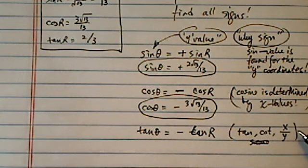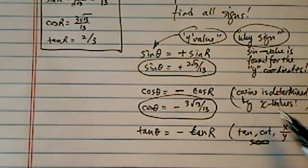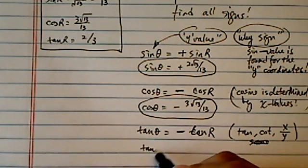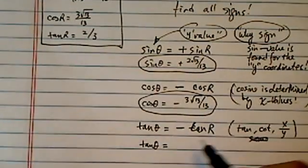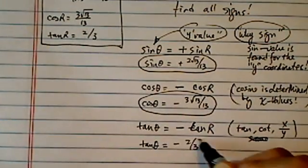That's why in quadrant 3 and quadrant 1, tangent are positive. In quadrant 2, it's negative. So therefore, we have tangent theta is equal to minus 2 over 3.